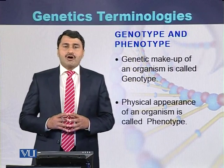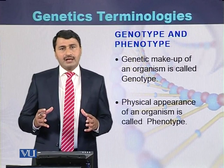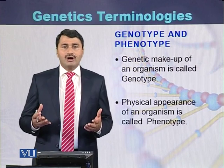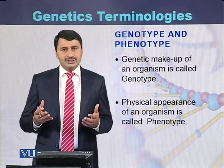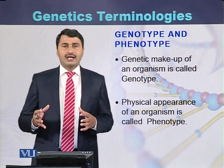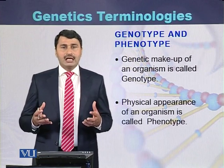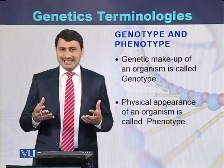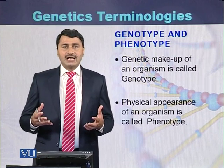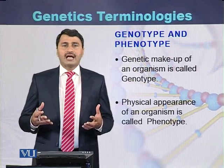What is the meaning of genotype and phenotype? Genotype is the genetic makeup of an organism, such as the number of chromosomes, the number of genes, or the sequence of genes. While the physical appearance of an individual — like height, skin color, or eye color — is called the phenotype.